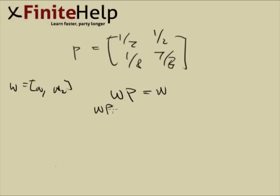From that, you can derive the equation, which is w times p minus i equals 0. W is w1 and w2. Now we need to find p minus i first. i is 1, 0, 0, 1.